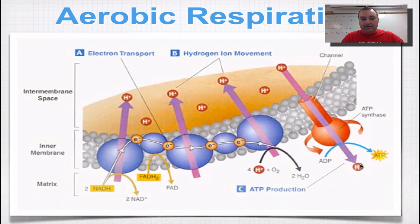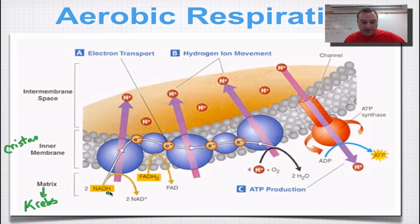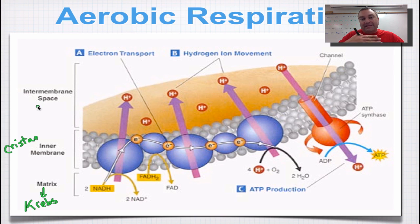This diagram shows you an electron transport chain. You see these phospholipids? This is the inner membrane of the mitochondria — and remember, when we talk about inner membrane, we're also talking about those folds called cristae. This is the matrix, the inside, and the matrix is where the Krebs cycle occurs. The intermembrane space is the spot between the inner membrane and the outer membrane of the mitochondria.